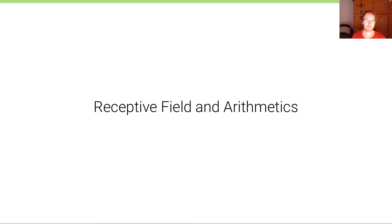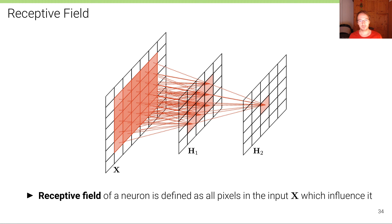I want to briefly mention the notion of receptive field and show you the relationship between the size of the input and output tensors. Receptive field is defined as all pixels in the input X that influence a particular neuron.